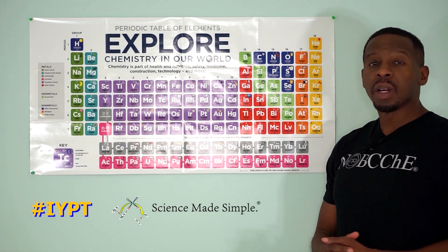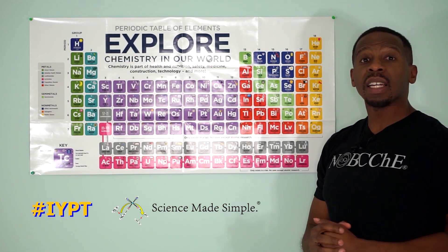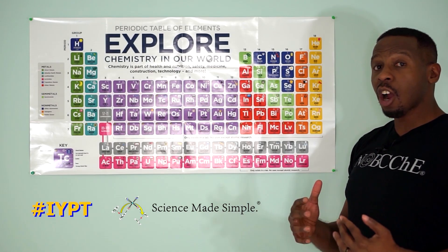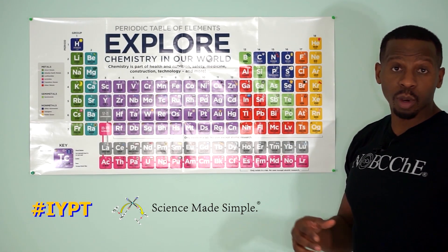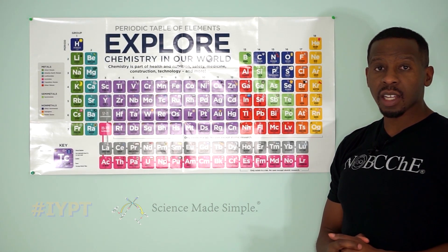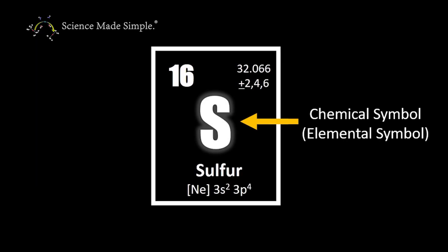For example, hydrogen has one proton in its nucleus and is thus element number one, whereas carbon has six protons in its nucleus and is the sixth element listed in the periodic table. The elemental symbol is made up of one or two letters that identify an element, and it is typically located in the center of an element's block. Having a short way of identifying an element is helpful when chemists write out elemental formulas like CO2 for carbon dioxide.